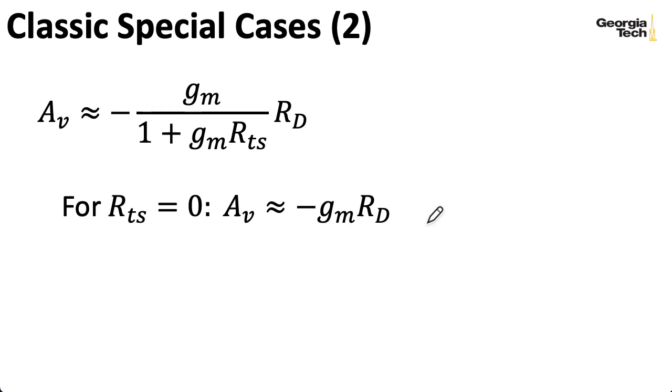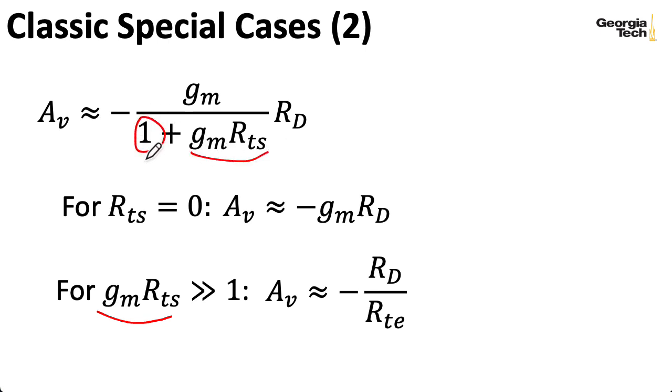But if we do have some source bypassing, and this gm times RTS factor here is a lot bigger than 1, well then this 1 is negligible, and the GMs cancel, and I wind up with our drain resistance divided by the Thevenin equivalent resistance looking out of the emitter. So we can set the gain using just these fixed resistors, so we're less subject to variations in gm.